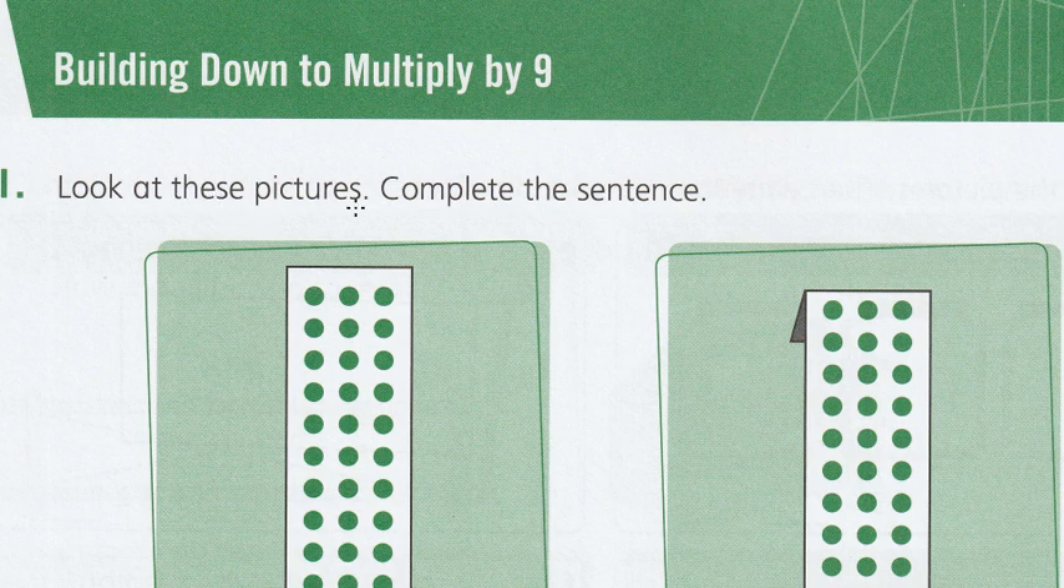So look at these pictures and complete the sentences. We're looking at 1, 2, 3, 4, 5, 6, 7, 8, 9, 10, and we've got three rows of 10.